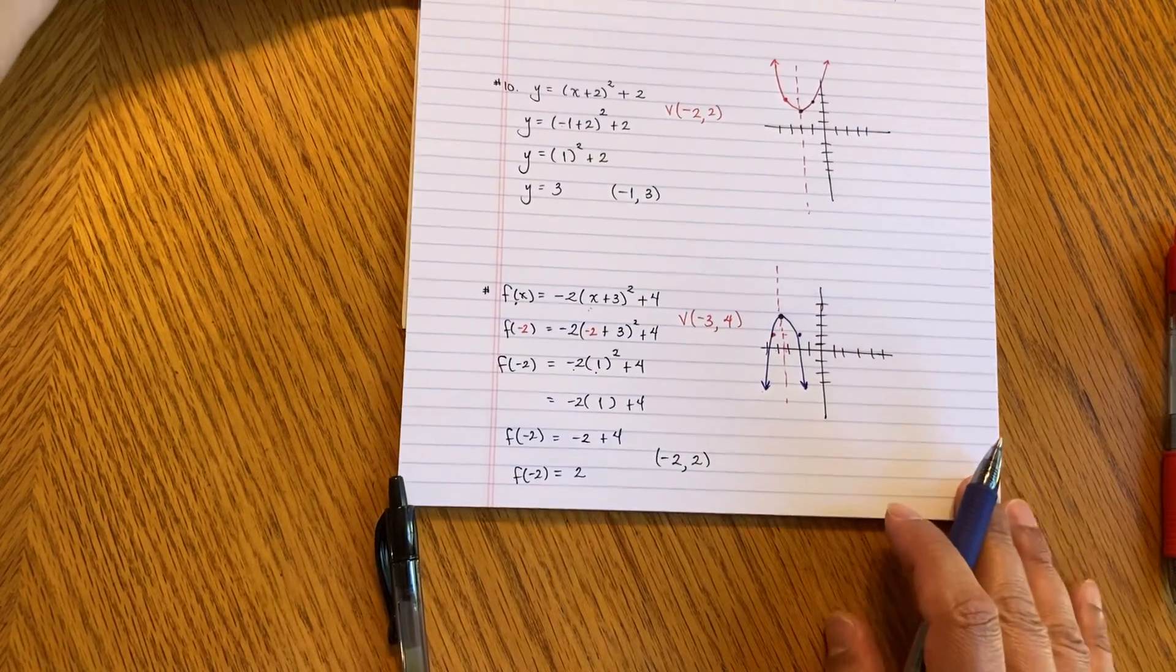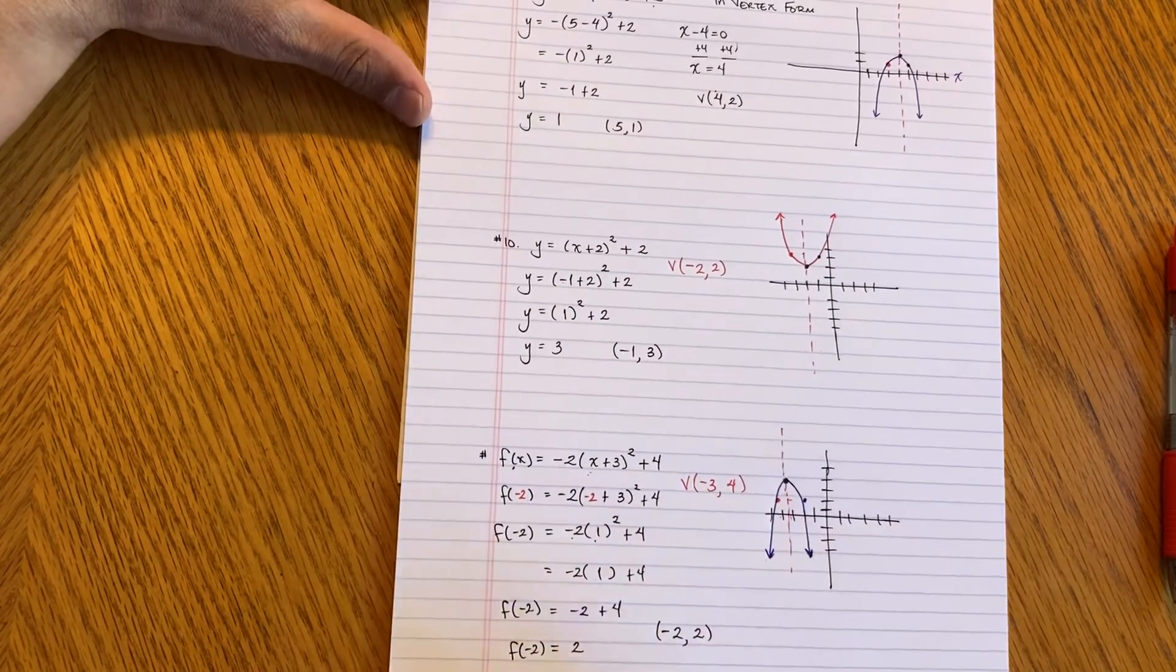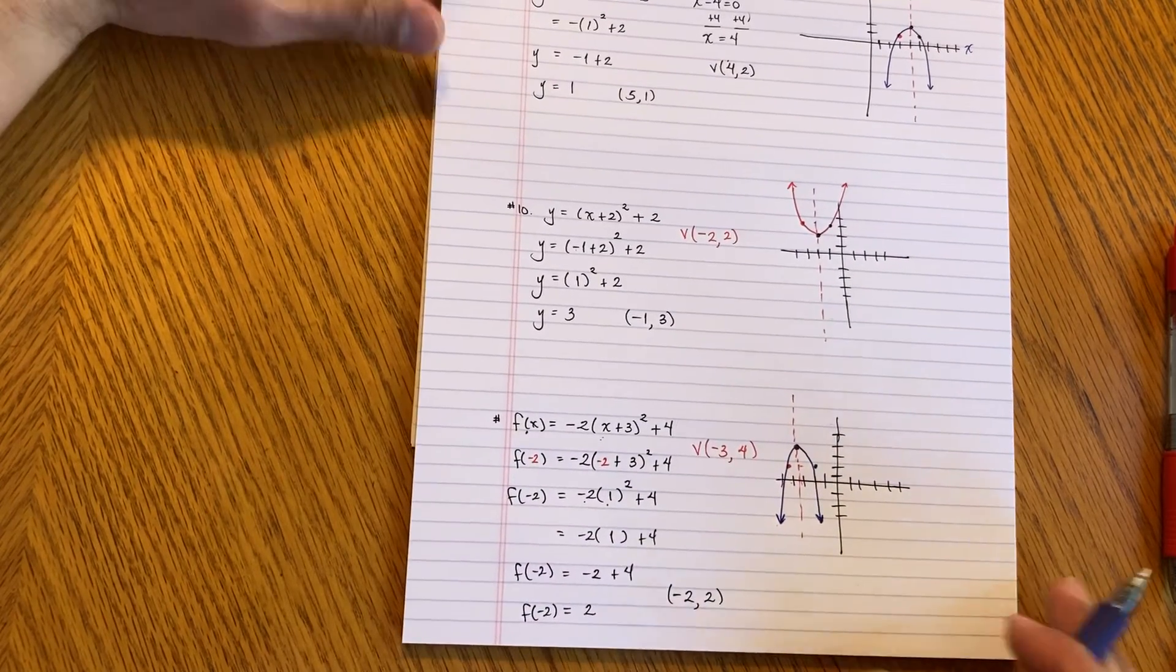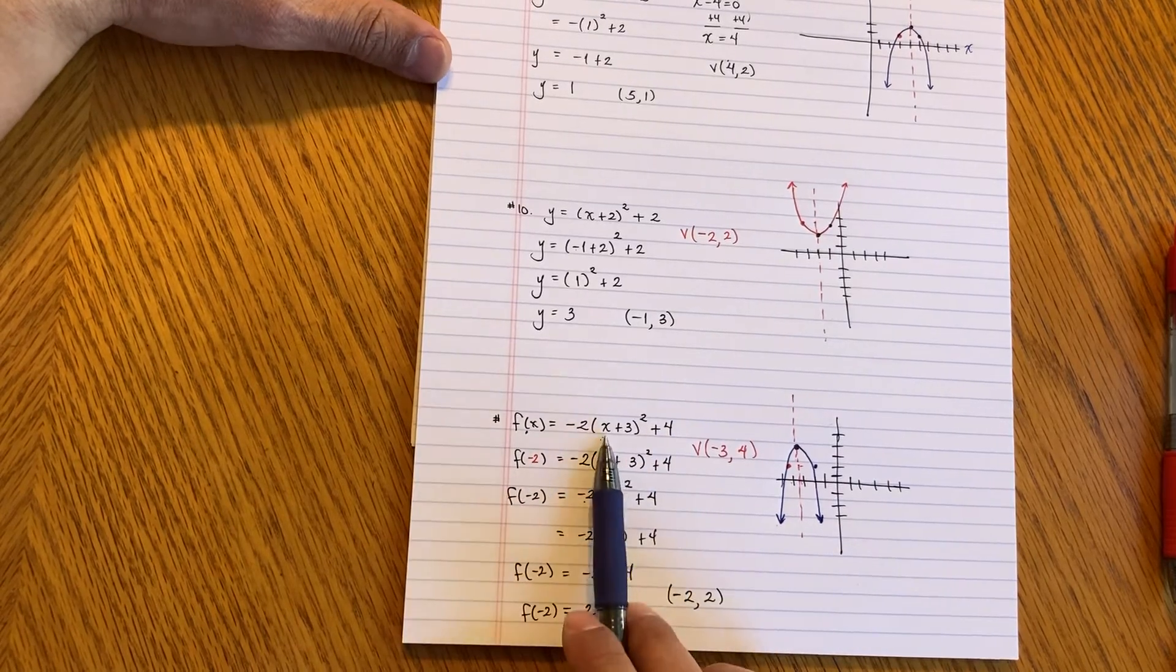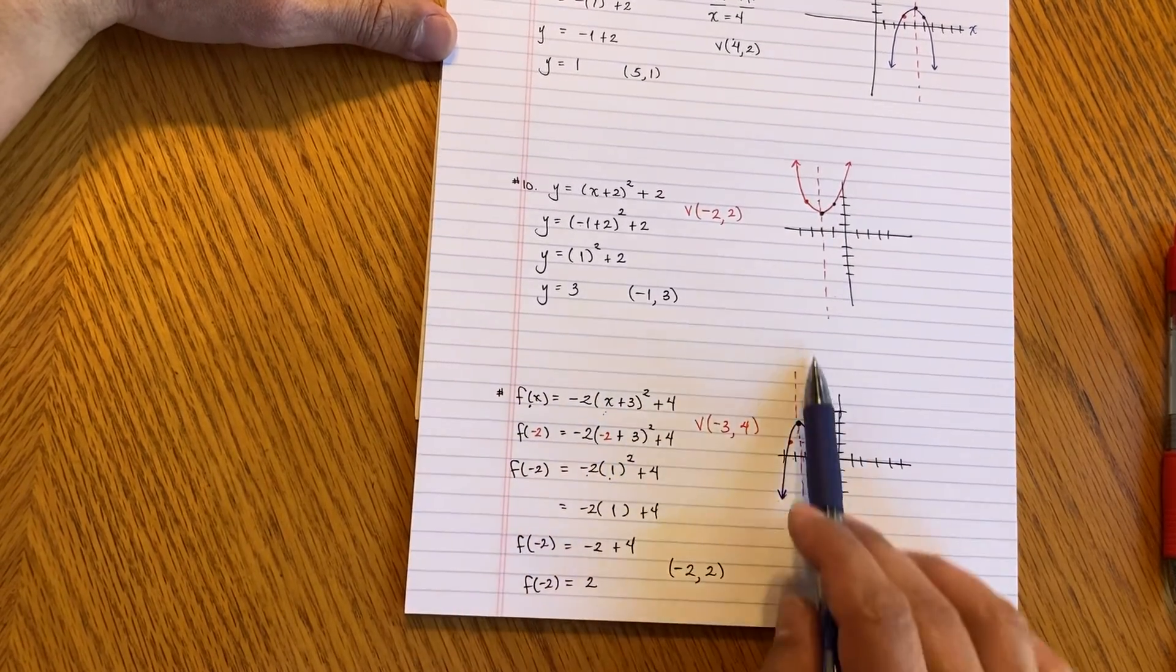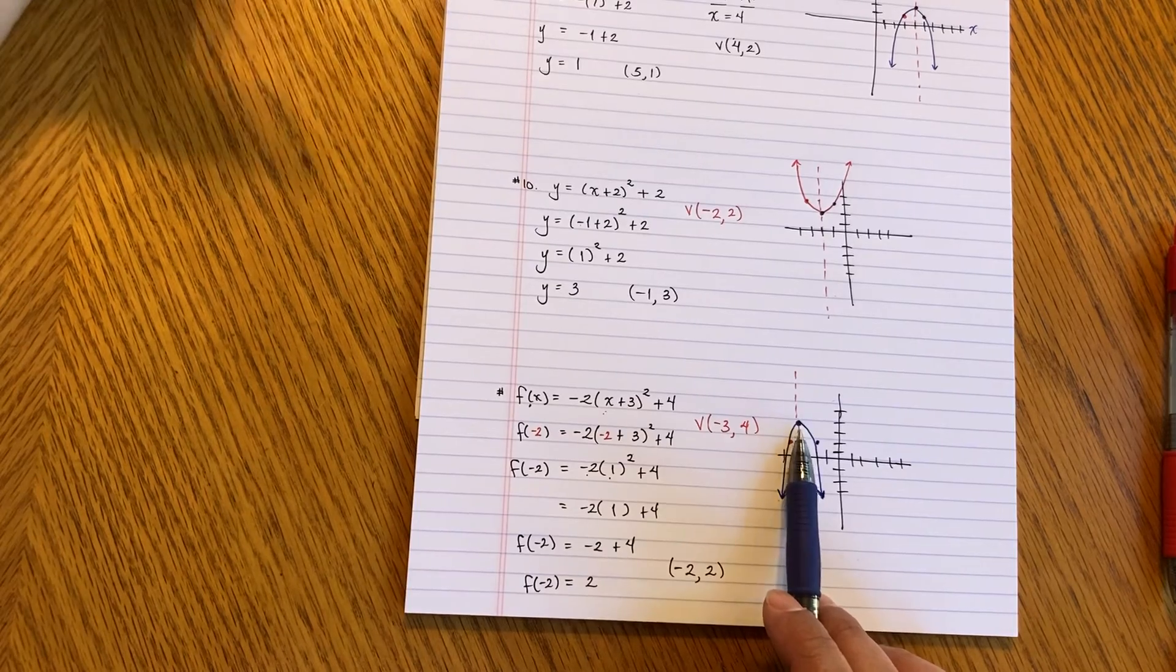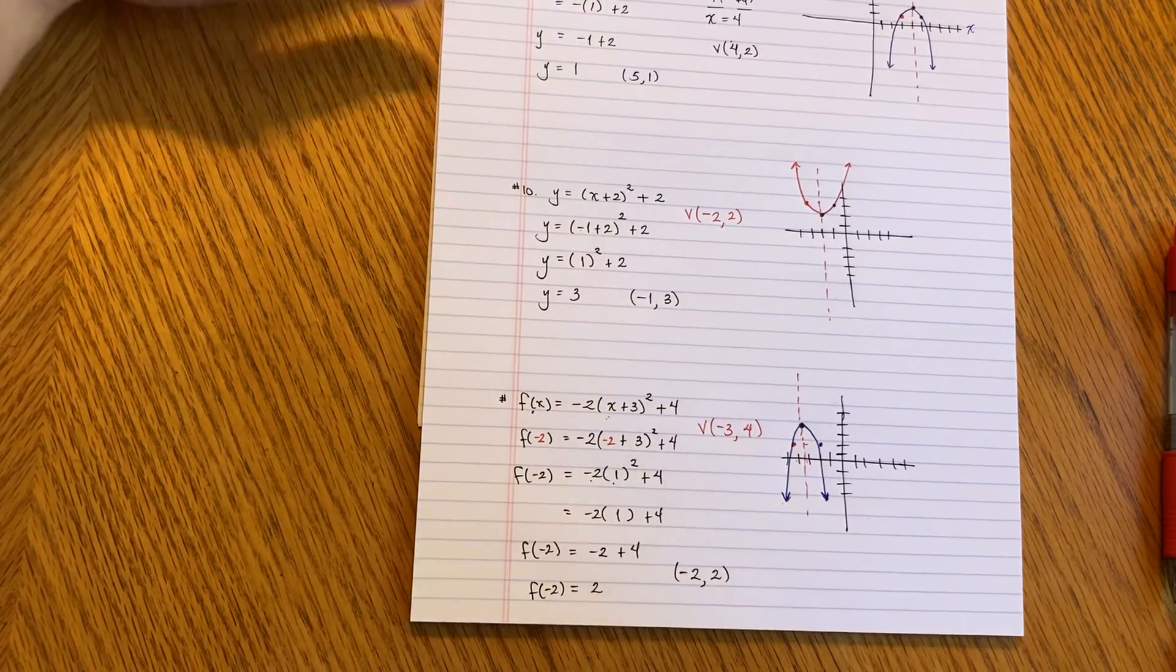Well, hopefully that helped, guys. Let me know. If not, I can give you guys some more examples. But in essence, remember, here's your vertex. Pick another point. Make it easy for yourself. And then use your line of symmetry to mirror it left and right. See you guys next time.